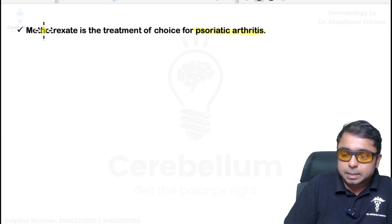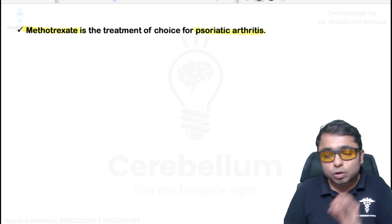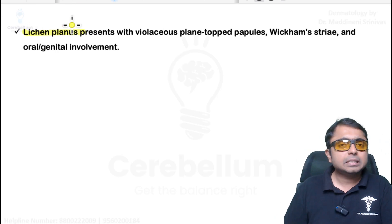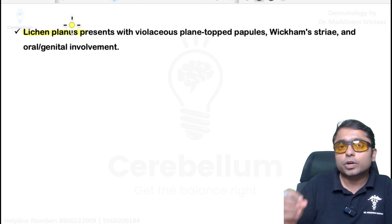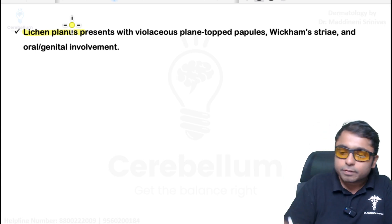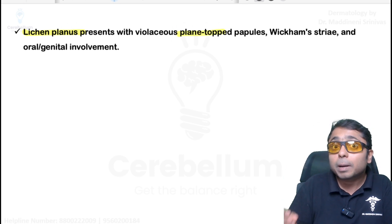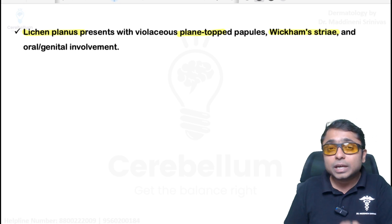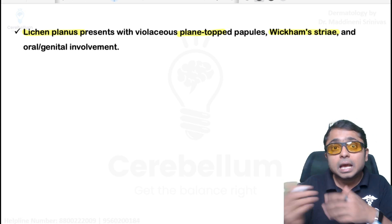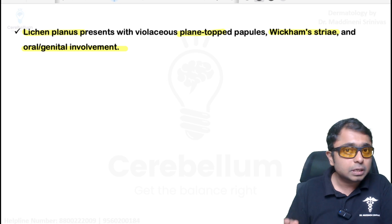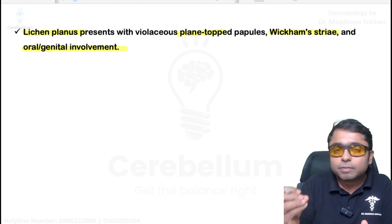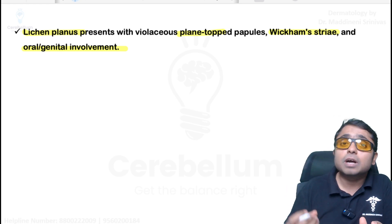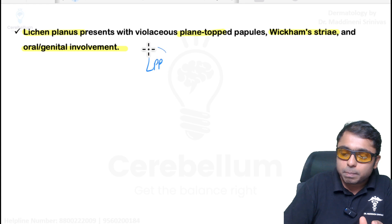For psoriatic arthritis, methotrexate is the drug of choice. Lichen planus is a papulosquamous disorder presenting with many P's: papular lesions/plaques that are pruritic, present on flexor surfaces, flat-topped, polygonal, purple colored, with reticulate white lacy Wickham's striae on skin and genitals. Mucosal lesions are common. Scalp involvement produces scarring alopecia, which is irreversible hair loss, called lichen planopilaris.